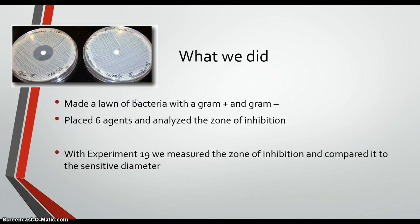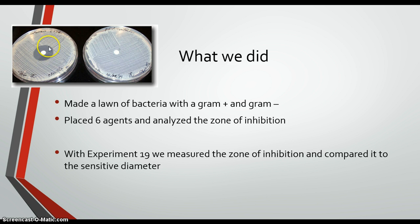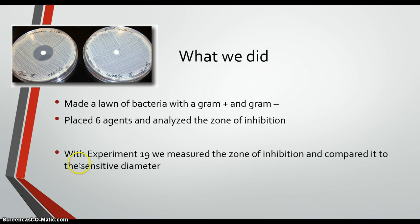In experiment 19, we used antibiotics and assessed their ability to kill bacteria. If the chemical kills the bacteria, you'll see a clear zone of inhibition — an area where there is no bacterial growth. If the chemical didn't do anything, there is no zone of inhibition. The difference with experiment 19 is that we actually measured the zone of inhibition and compared it to the sensitive diameter.